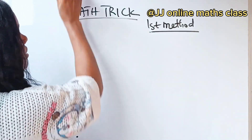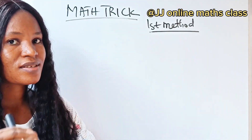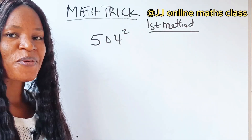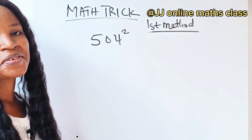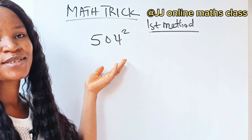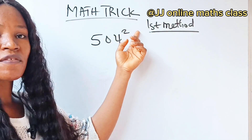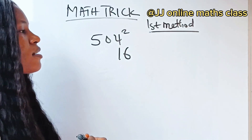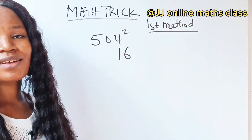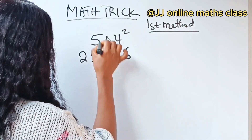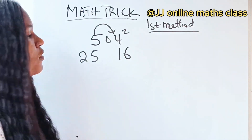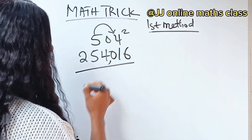Let's solve another example using the third method. As soon as you are asked to solve 504 squared, try it by yourself first. Let's do it together: four squared gives us 16, so we write 16. Zero squared is zero — we leave space in the middle. Five squared is 25 — write 25. Now five times four is 20, and double of 20 is 40. Fill it in and that is our solution.